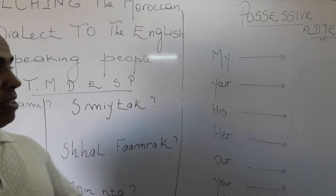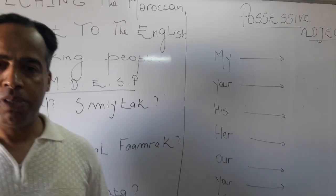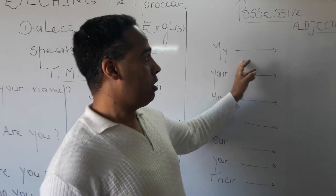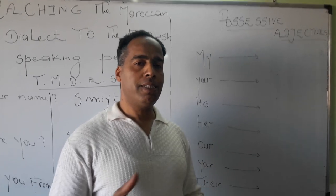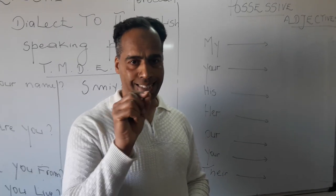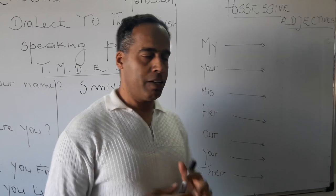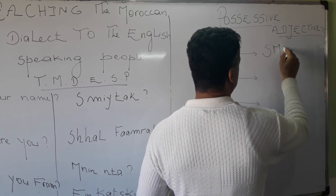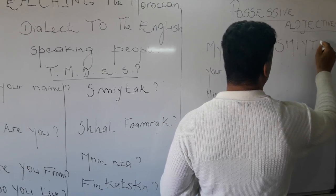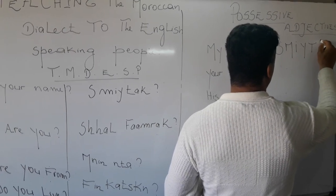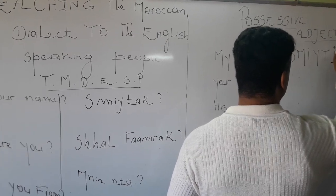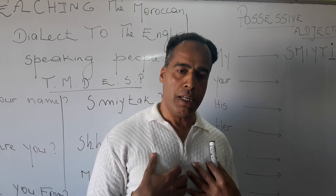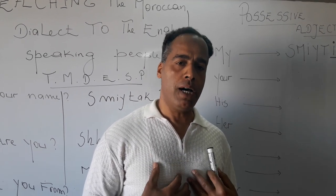In English we say 'my' when we speak about something we possess. In the Moroccan dialect, the letter 'i' at the end of a word means 'my.' For example, 'smithi' — pay attention to this final letter, which gives the possessive adjective. 'Smithi' means 'my name.'